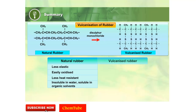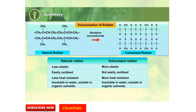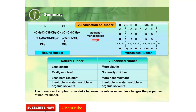Through vulcanization, rubber becomes more elastic, strong, durable, and heat-resistant. The presence of sulfur cross-links between the rubber molecules changes the properties of natural rubber.